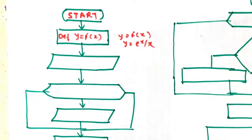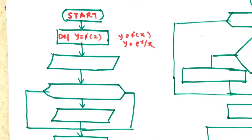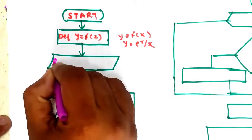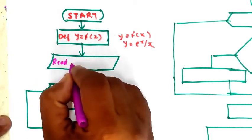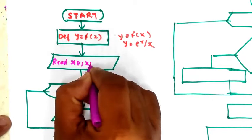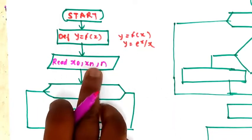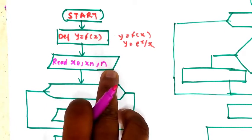The next step is to find out — we have to read the values of lower limit, upper limit, and number of steps. We read x0, xn, and n values, which represent the lower limit, upper limit, and number of steps.